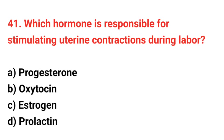Question number 41: Which hormone is responsible for stimulating uterine contractions during labour? The right answer is option B: Oxytocin.